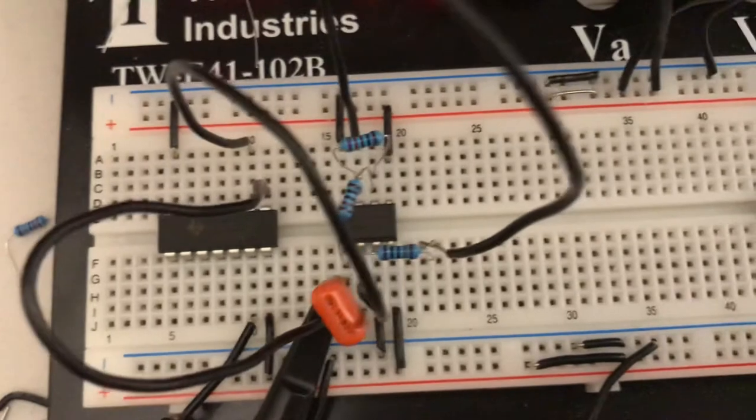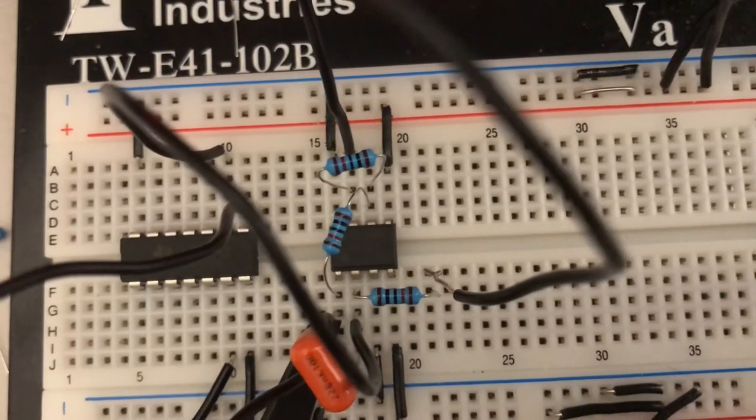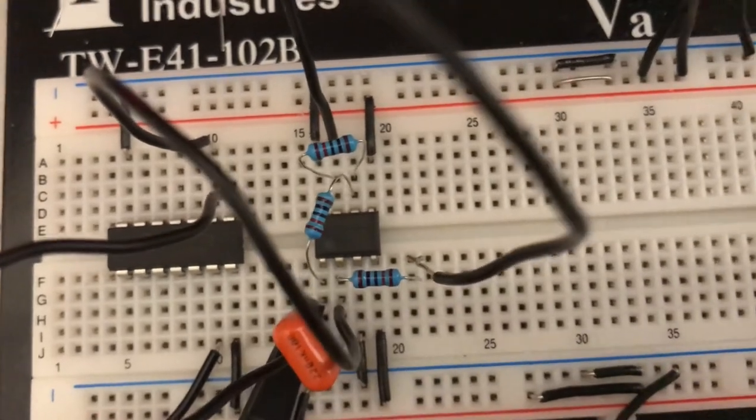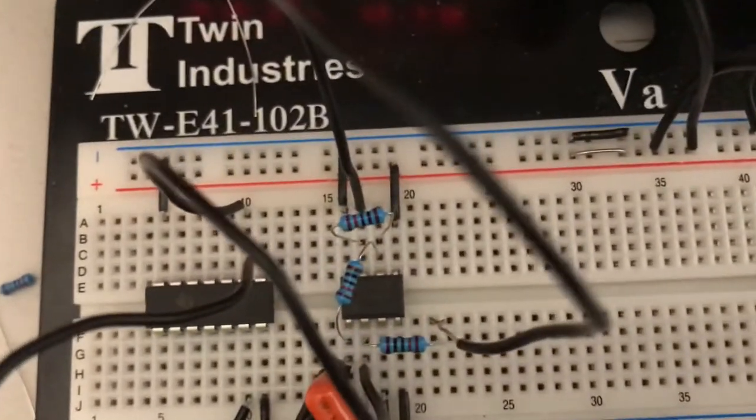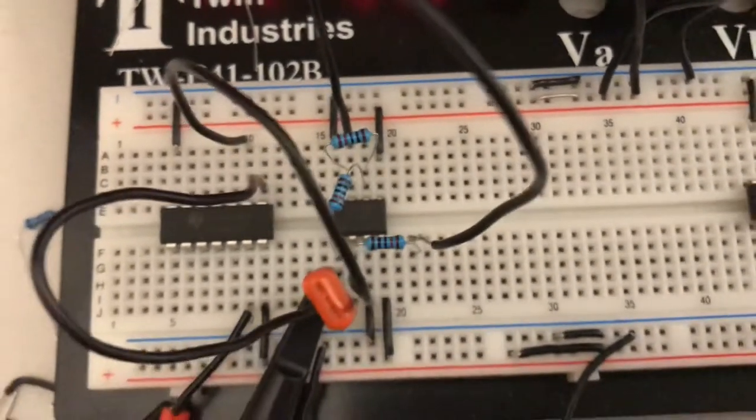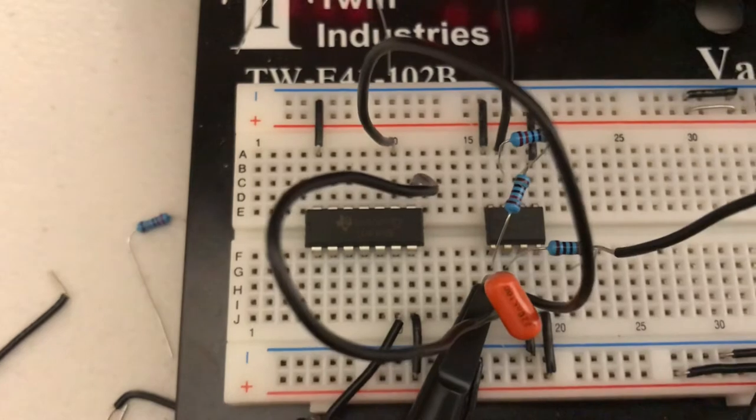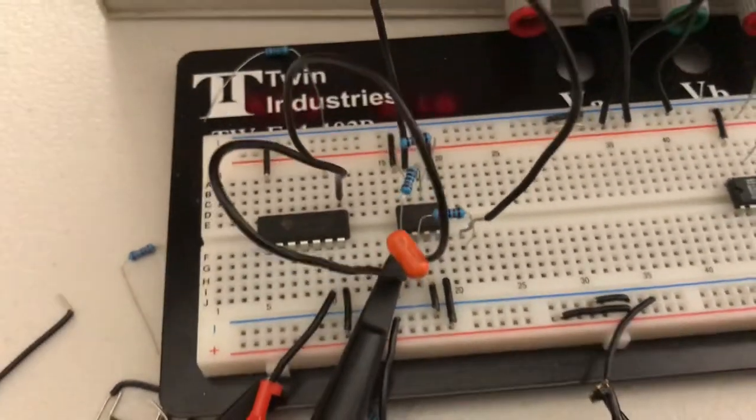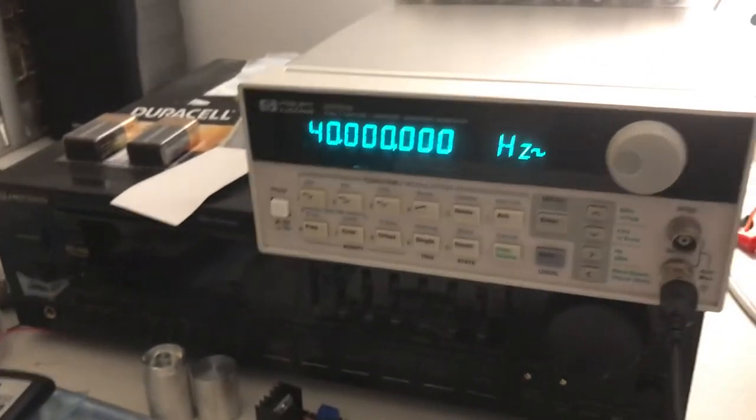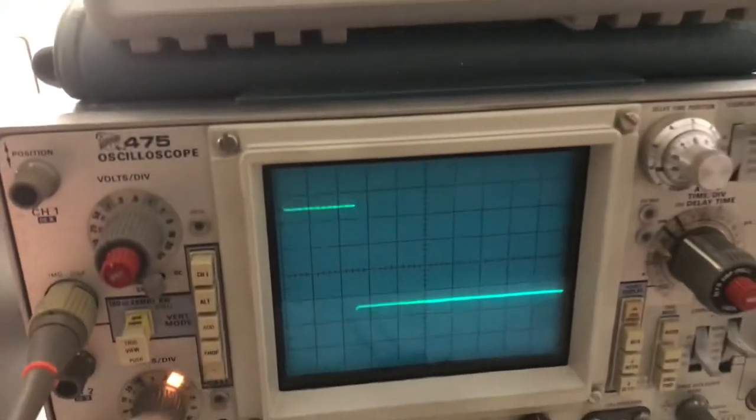So the way this works is the integrator and the inverting sum block are both contained in this TL072 op amp. This is the integrator here on the bottom and the summer is on the top. And the analog switch there is used to reset the integrator, and it's basically powered by my function generator which is outputting a pulse like so.